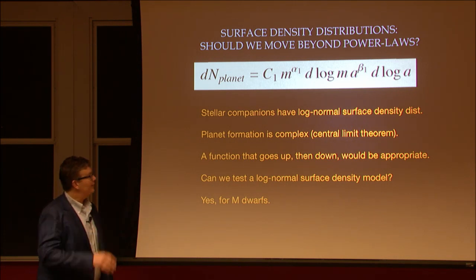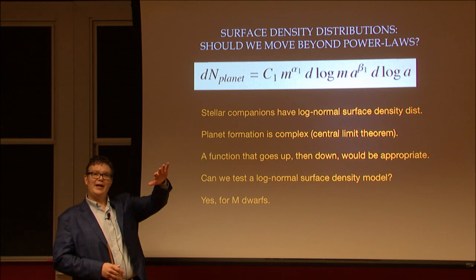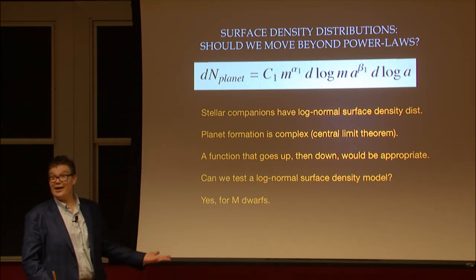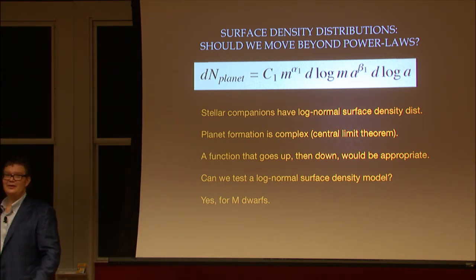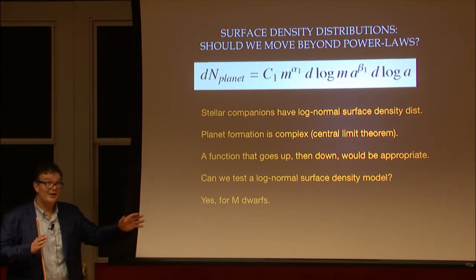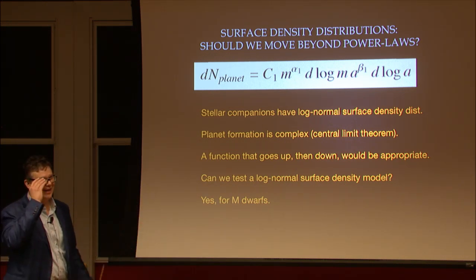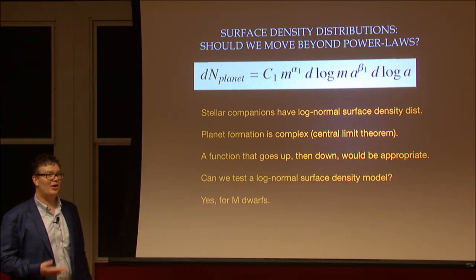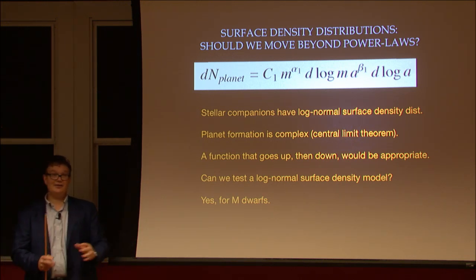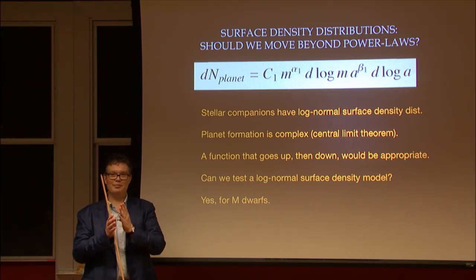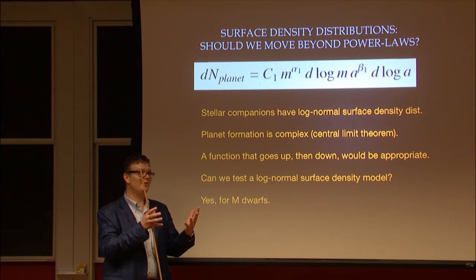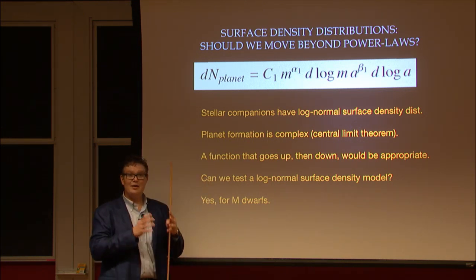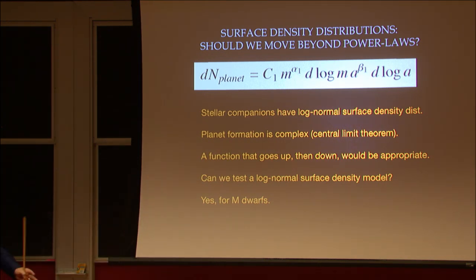Back to the power law and my embarrassment with it — I see a function that's rising and then falling. So why not a log normal? We're inspired by the IMF being a log normal; the surface density of stellar binary companions is log normal. So why not try to fit a log normal to the surface density of gas giant planets? It turns out we can, but only for a special sample: the M dwarfs. The Einstein ring is sensitive to planets over the range from 1 to 8 AU, and that's a wonderful result. We assume the microlensing host stars are M dwarfs — several are confirmed — though that is still an assumption.